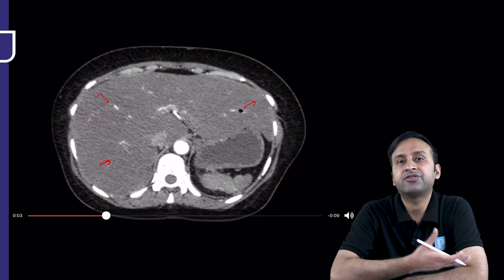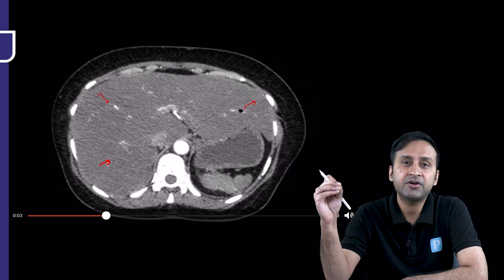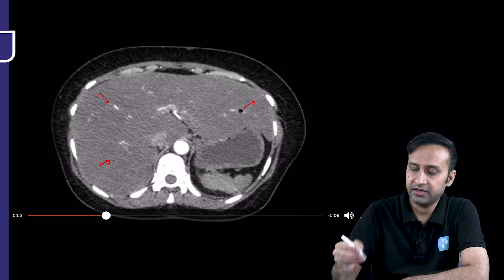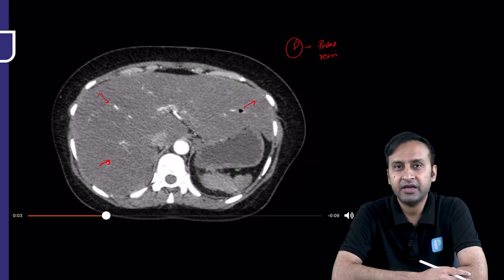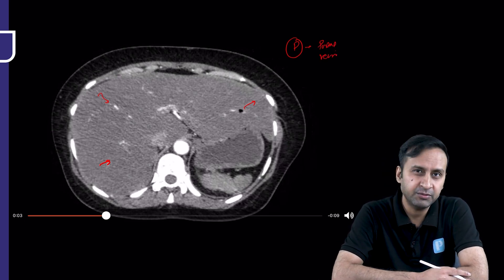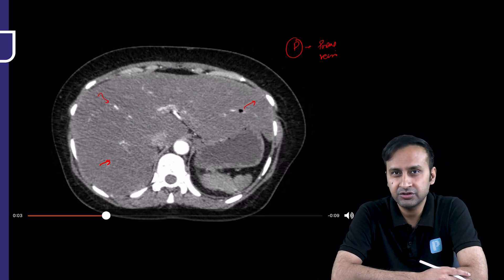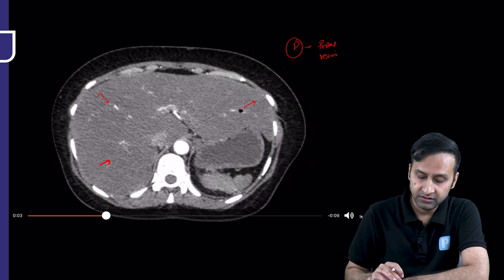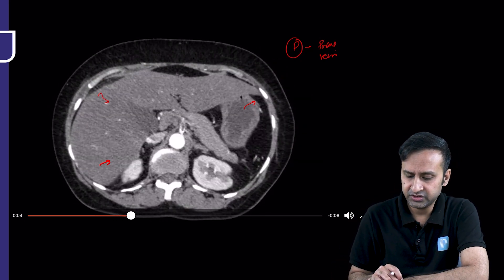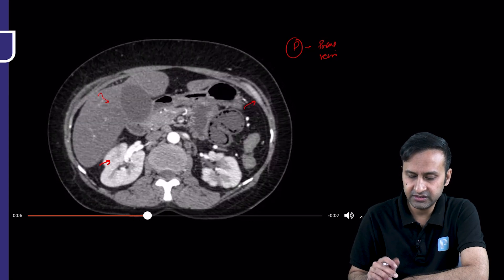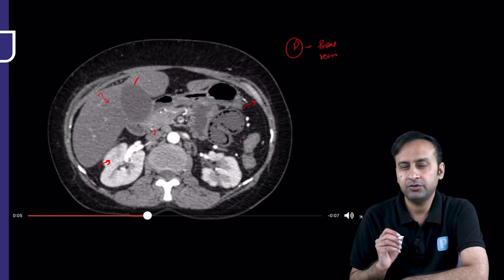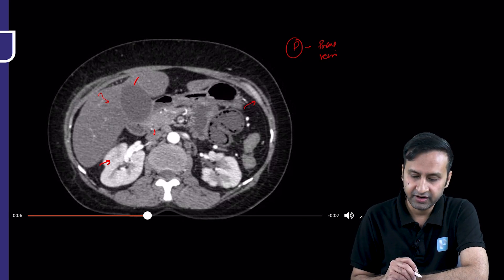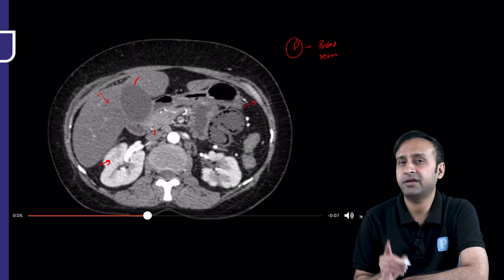How do we differentiate portal venous gas from pneumobilia? Pneumobilia is more central — if you find air specks in a peripheral location, it is more likely to be portal vein gas: 'P for peripheral, P for portal vein gas.' Secondly, in pneumobilia, the patient would have a history of some intervention, or you might see air in the gallbladder fossa. This patient had no such history; the entire CBD and gallbladder looked clean. So there was no confusion — we knew we were dealing with portal venous gas.